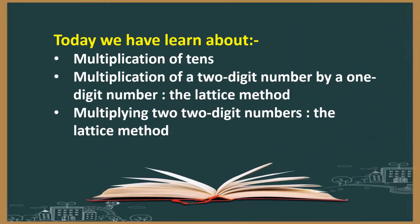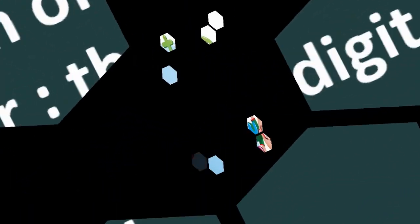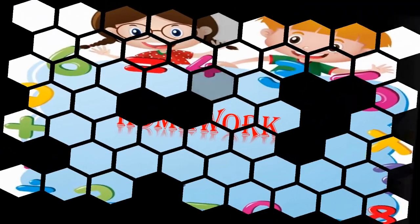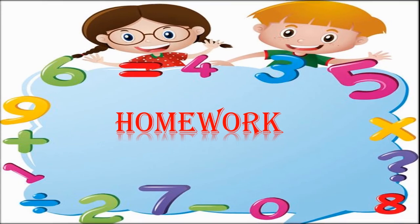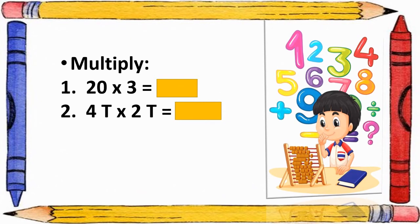So students, today we have learnt about multiplication of tens, multiplication of a 2-digit number by a 1-digit number using the lattice method, and multiplying two 2-digit numbers using the lattice method. Your homework is: multiply 20 into 3, and 4 tens into 2 tens.